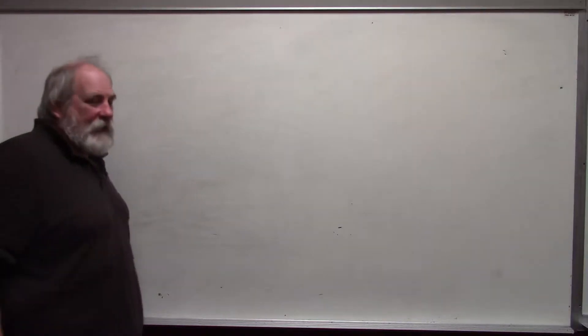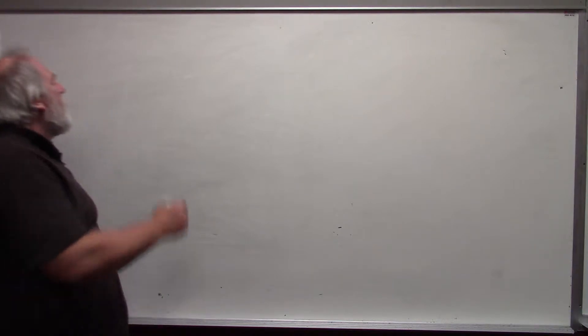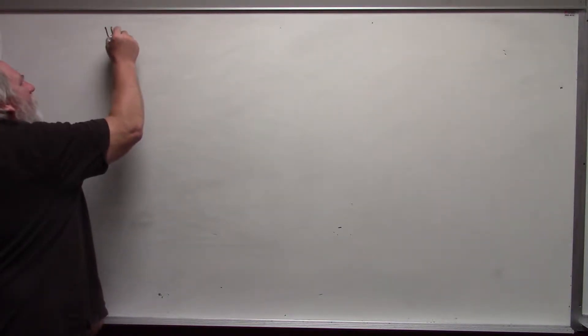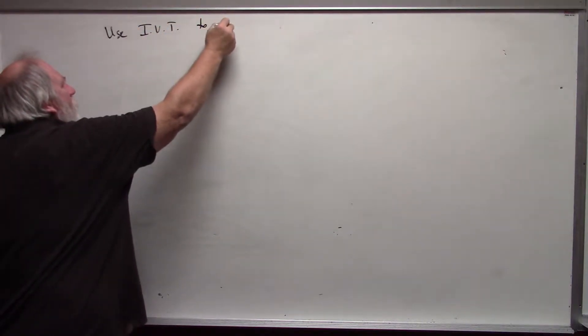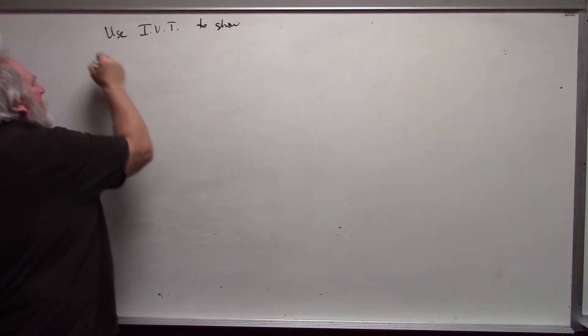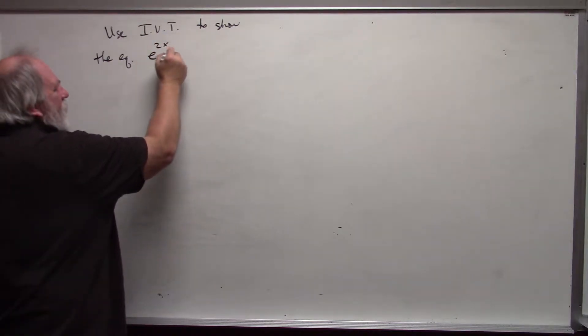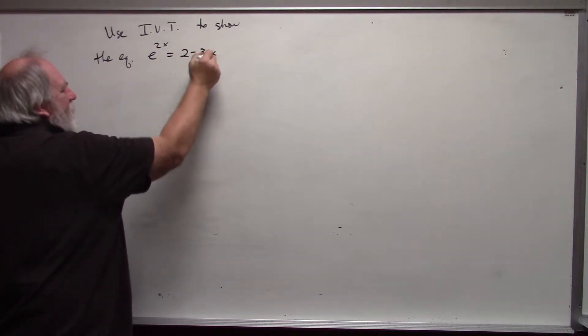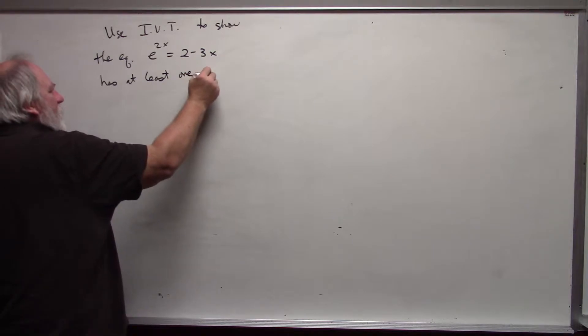Hi, today we will consider using the Intermediate Value Theorem to show the equation e^(2x) = 2 - 3x has at least one real solution.